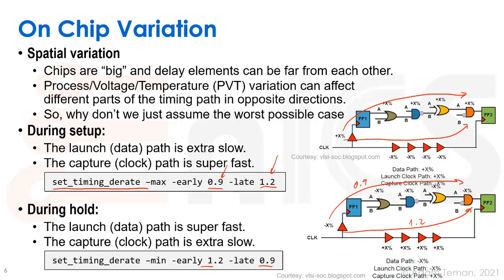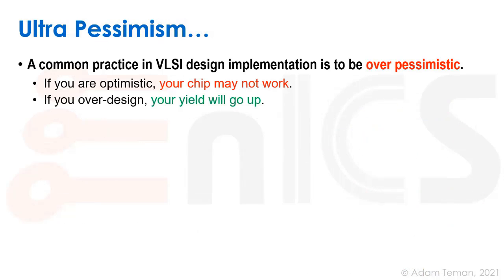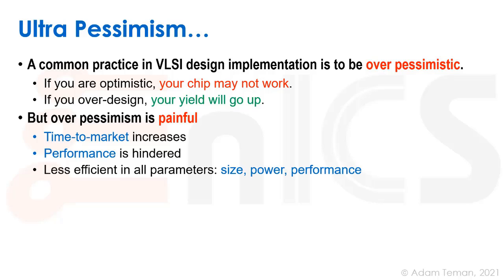This is a kind of ultra-pessimism, and it's common practice in VLSI implementation to be over-pessimistic. It's a good practice because if you're optimistic, you may get a chip back that won't work. And if you over-design, your yield goes up and you'll sell more chips. However, it's also very painful: time to market increases because it's harder to meet constraints when over-pessimistic, and you hurt your performance. All parameters — size, power, performance — are worse. Over-constraining means using bigger buffers, more chip area, more power, and planning for lower performance than could actually be achieved.